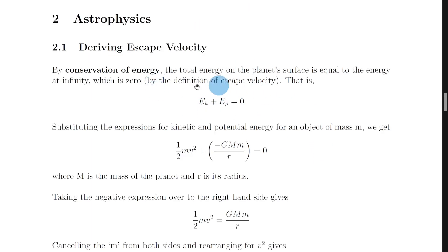So just to recap, you'll want to start off with this expression here: Ek plus Ep is equal to zero, which just tells us that the total energy is the sum of the kinetic and potential energies at the planet's surface, and that is equal to zero joules at infinity by the definition of escape velocity.